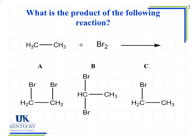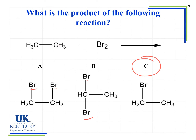Let's look at an example: what is the product of the following reaction? We have CH3CH3, which has six hydrogens, reacting with Br2. One of the bromines can replace one of the hydrogens on this molecule, so C is our correct answer. Notice that choices A and B show two bromines added onto the molecule, which will not happen in a substitution reaction — normally we just see the substitution of one hydrogen by one atom, in this case bromine. So our correct product is CH2BrCH3.